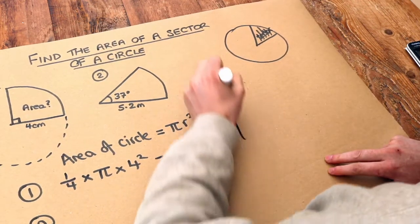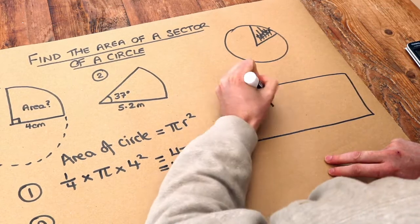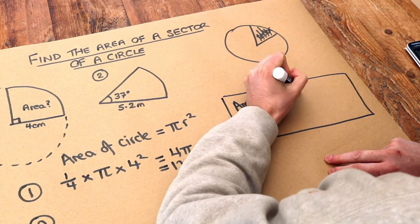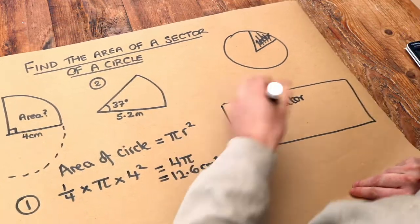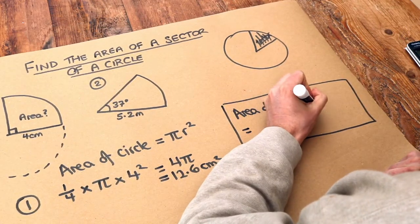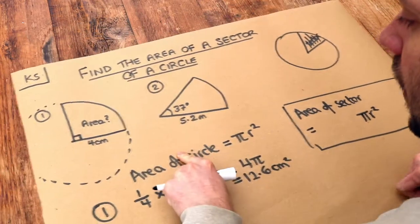Now, think about it. To find the area before, we found the area of a full circle, which was just π r squared. And then we found the suitable fraction of it.